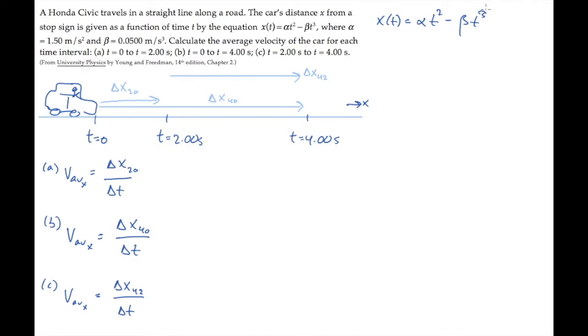The position at time t equals 0 is given by alpha times 0 minus beta times 0, which is just 0. At t equals 2 seconds, we get this expression, where alpha is 1.50 meters per second squared and beta is 0.0500 meters per second cubed. Calculating this gives us 5.60 meters.